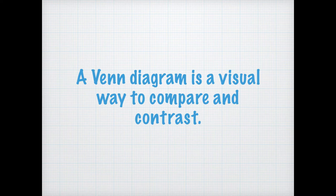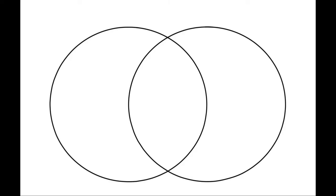Or I could do the same with birds and mammals to look at what's similar between them and what's different about them. If you want to make a Venn diagram, all you do is just draw two circles that overlap each other. The circles are usually drawn side by side, and where they overlap, you need to have enough room to write.